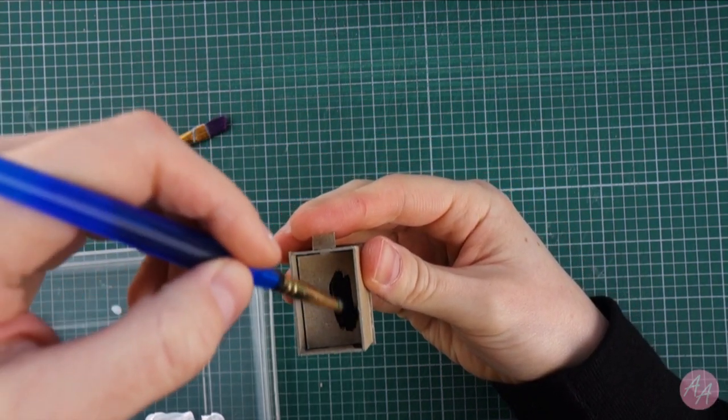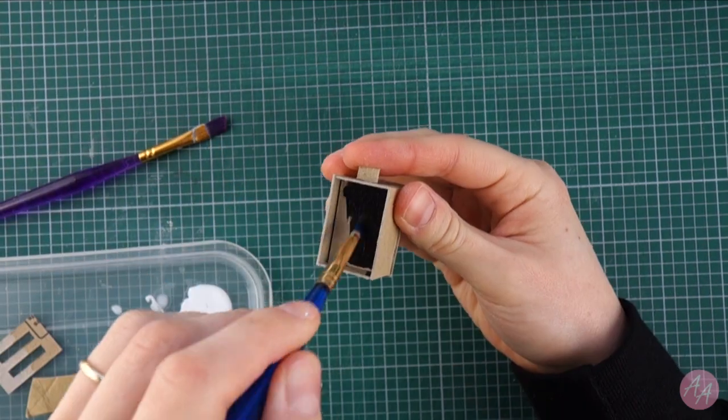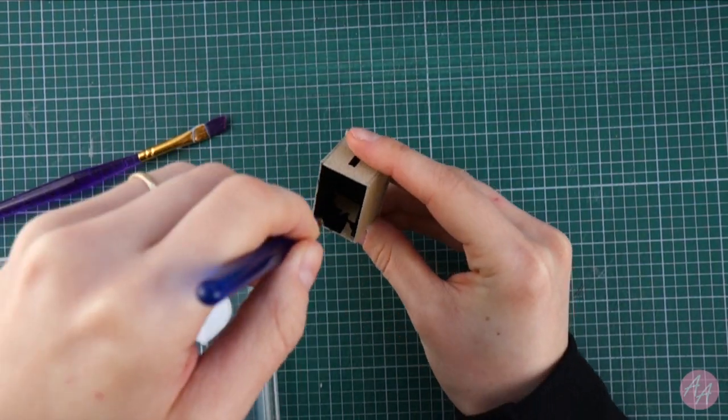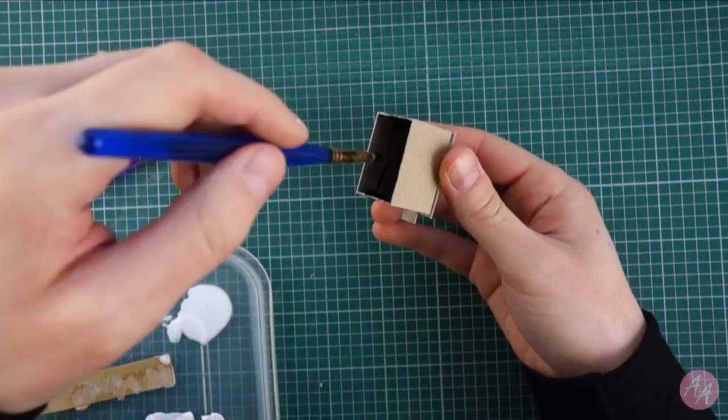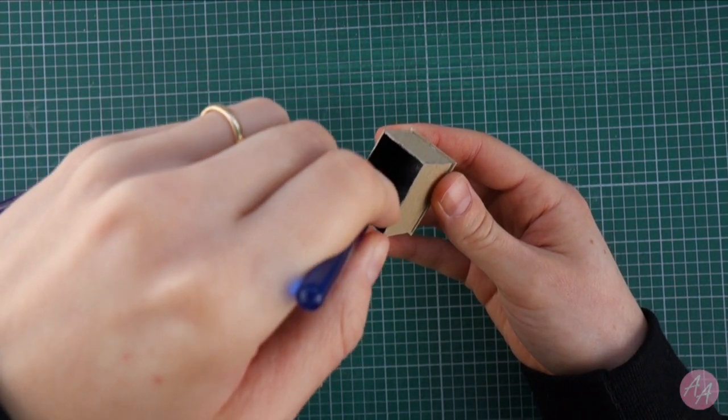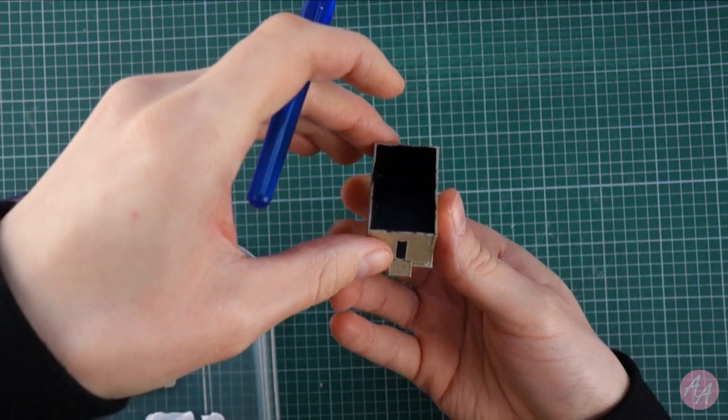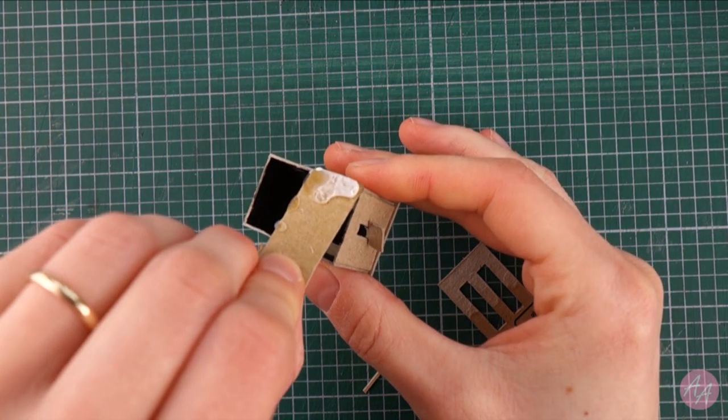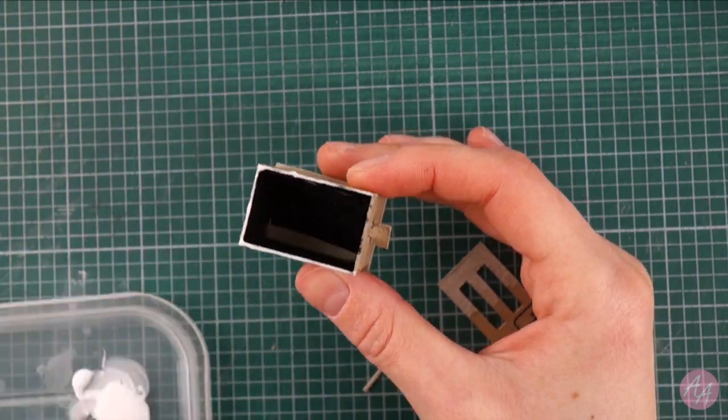Before sticking the top piece on, I'm going to paint the inside of the toaster black. Then I can stick the top piece on, along with two little strips of card on the base of the toaster for a bit more realistic detail.